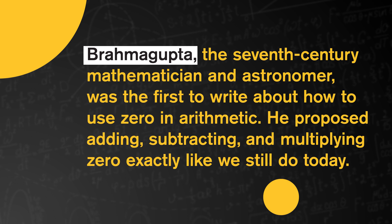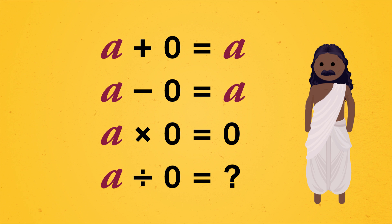Now, to deal with negative powers of 0, which moves exponents to the denominator, we have to finally see what's really going on when we divide by 0. Brahmagupta, the 7th century mathematician and astronomer, was the first to write about how to use 0 in arithmetic. He proposed adding, subtracting, and multiplying 0 exactly like we still do today. According to his description, if we pretend a is any old number, then for addition, a plus 0 is a. For subtraction, a minus 0 is a. And for multiplication, a times 0 is 0. But he didn't address what happens when we divide by 0.